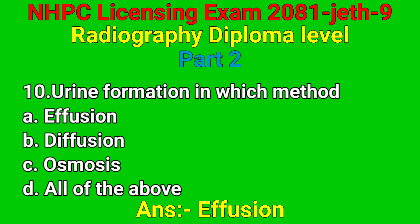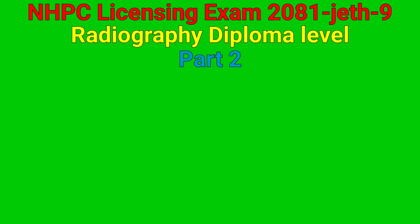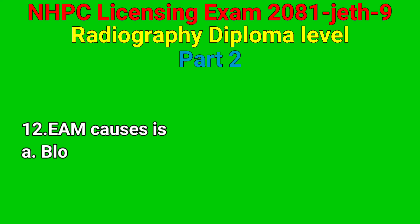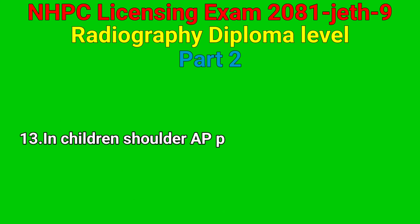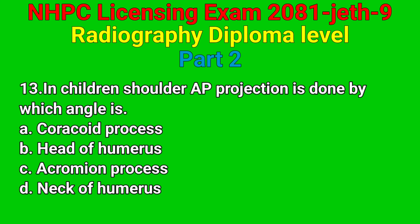Correct answer: option A — veins. Question number ten: urine formation — which method? Correct answer: option A — effusion. Question number eleven: what is the normal blood pressure? Correct answer: option B — 120 by 80 mmHg. Question number twelve: hemothorax causes — option A, B, C, D.